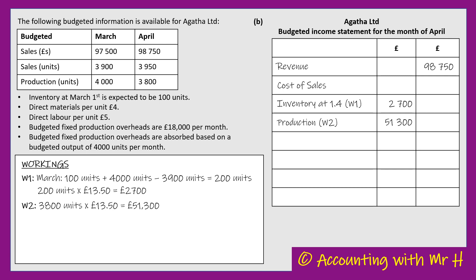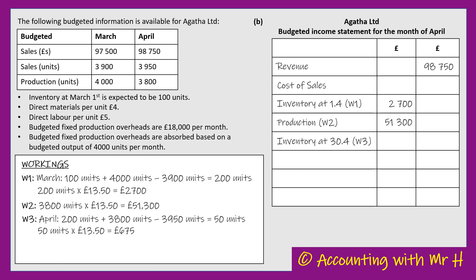To finish the cost of sales section, I need the closing inventory value at the end of April. In Working 3: they start April with 200 units, plan to make 3,800 units — giving 4,000 units — and expect to sell 3,950 units in April, leaving 50 units at the end of April. At £13.50 per unit, 50 units gives a closing inventory value of £675.